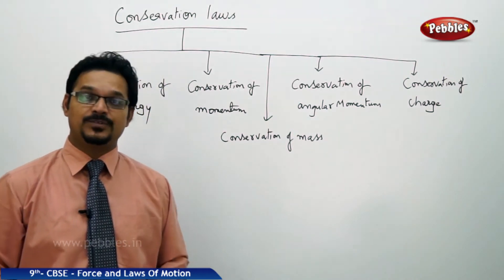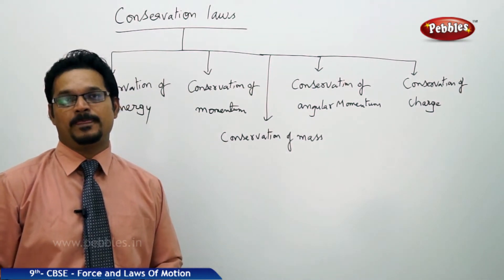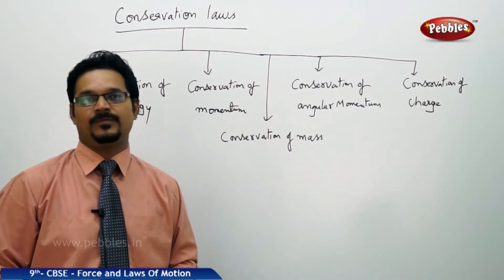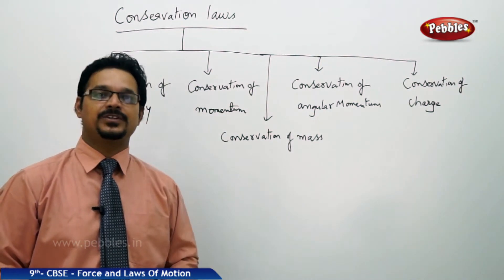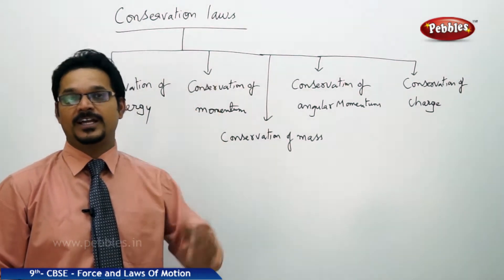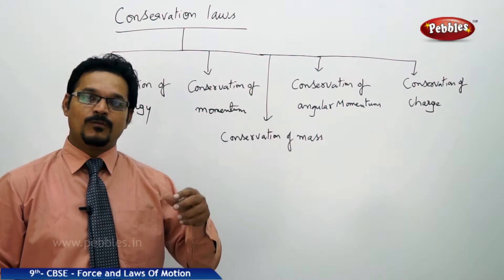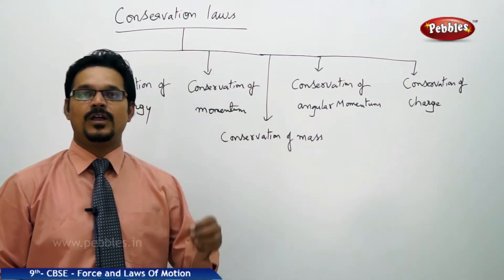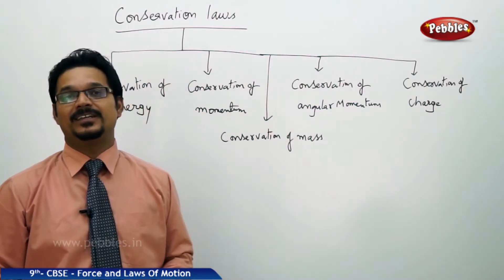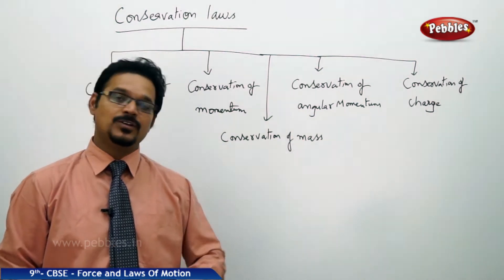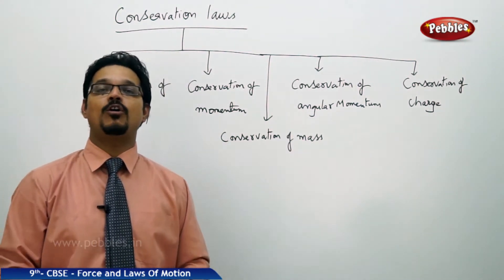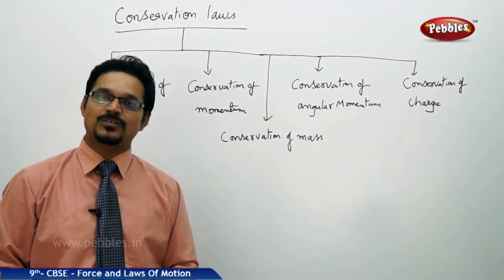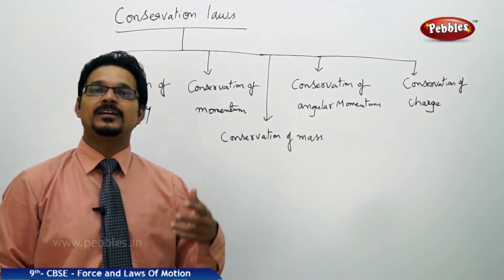Mechanical energy is mainly of two types: kinetic energy and potential energy. When you are running or walking on the road, the energy you have is kinetic energy. When you throw a ball upward, the ball has potential energy at the highest point. When any object moves against gravity, it has potential energy. Kinetic energy and potential energy change, but total energy always remains constant.